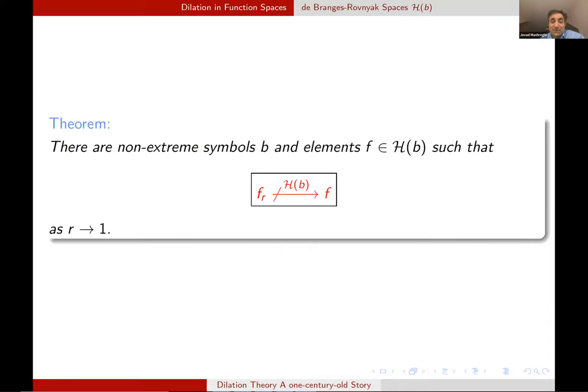Here is a theorem. There are non-extreme symbols B and elements in the H(B) such that F_R doesn't converge to F. This is the first dilation theorem which fails, but in a non-trivial way. We have seen other examples in this dilation fail, but for a kind of trivial reason, either the space was too big, like in the Nevanlinna class or in the Bloch space. I mean, they were not even separable, so we cannot hope that the dilation converge or even in H infinity. Here, we have a space such that it's separable. Polynomials are dense and all good properties are there and still F_R doesn't converge to F. That is why detecting this property wasn't that easy.